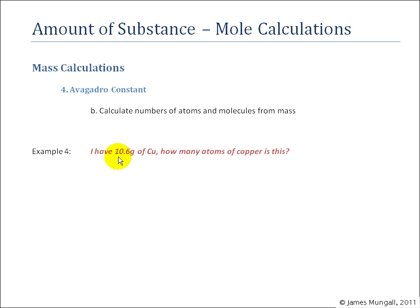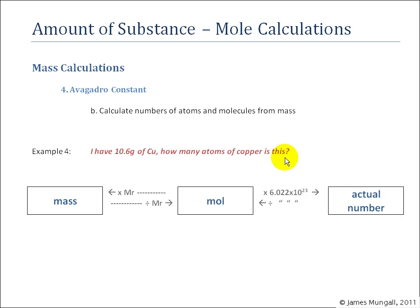So for example, I have 10.6 grams of copper. How many atoms of copper is this? Okay, so using what I just described previously we'll do our own version here. So let's put the mass of copper in there, 10.6 grams.